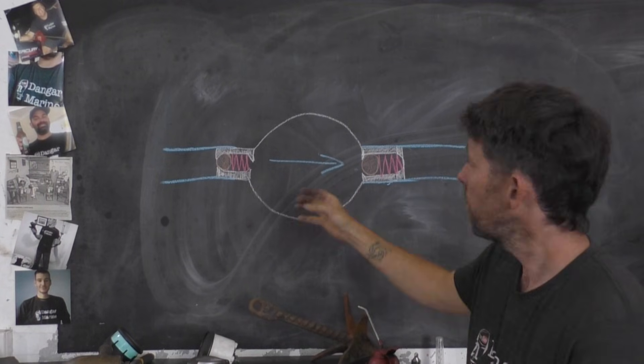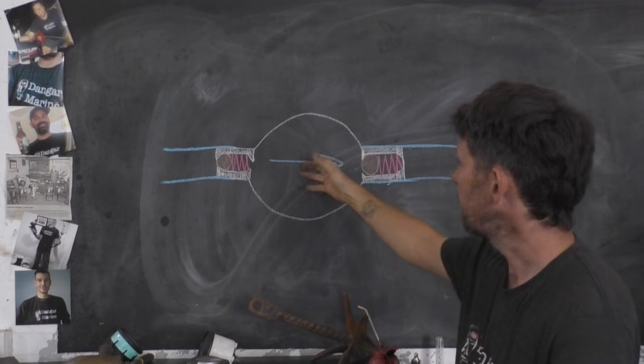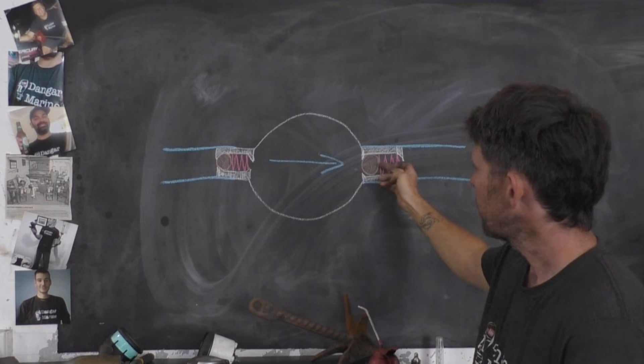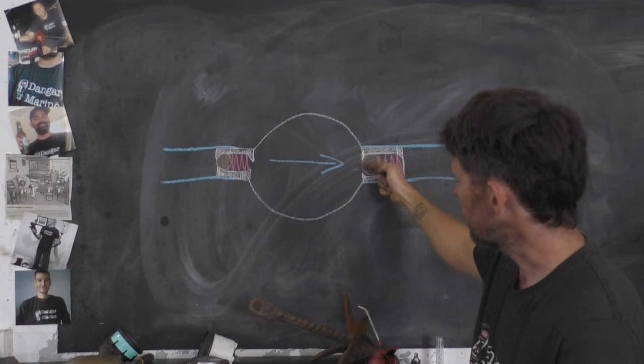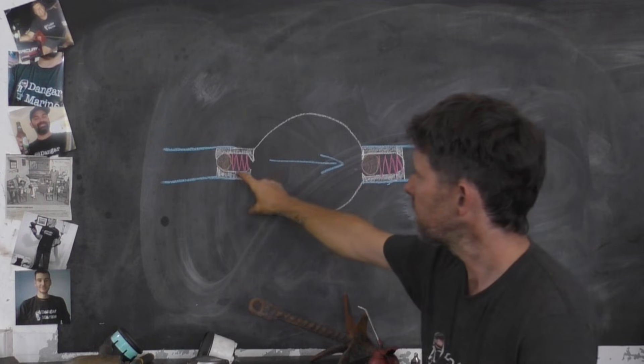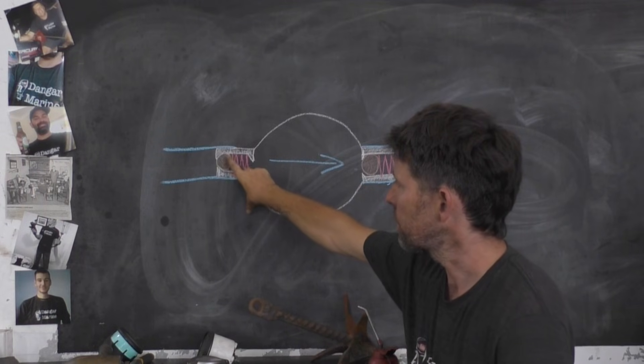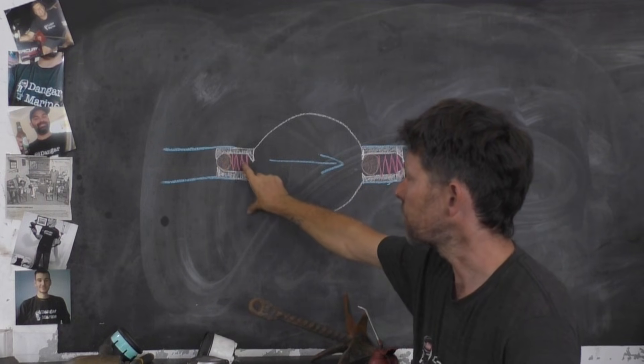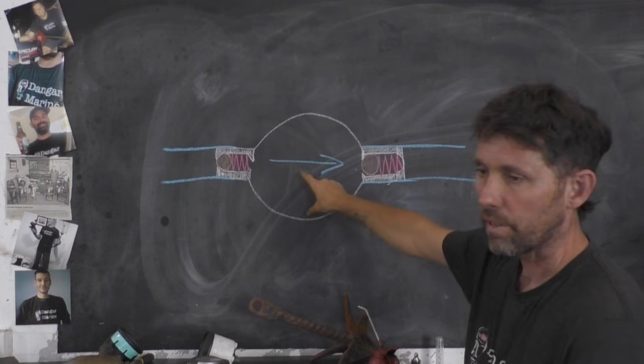When you then let go of the primer bulb, it starts to create a bit of a vacuum in here. Now, this vacuum closes this ball against this valve here, against this seat, even tighter. The spring pushes it as well, but the vacuum that gets created is strong enough to pull this little ball bearing here against this spring and start to suck fuel in.